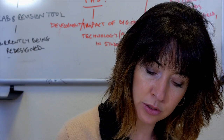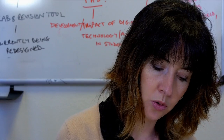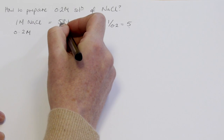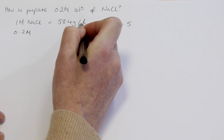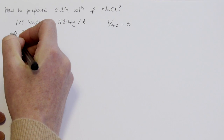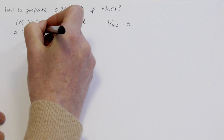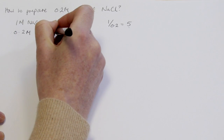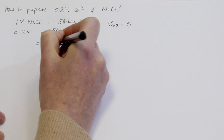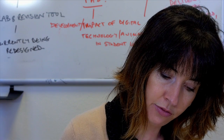Very often it's not a litre of a one molar solution that we need, so we need to calculate different molarities in different volumes. How would we prepare a 0.2 molar solution of sodium chloride? A one molar solution was made by solubilising 58.4 grams of salt in one litre. To make a 0.2 molar solution, we've reduced the amount five-fold, so it's 58.4 grams divided by 5, which equals 11.7 grams of sodium chloride in a litre of solute.